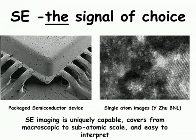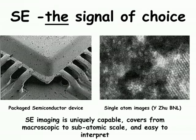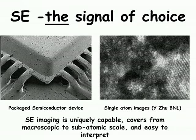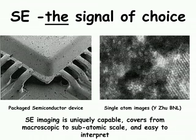What signal do we use? We use secondary electrons. As we now know from recent research, secondary electrons are uniquely capable. They cover everything from something macroscopic — on the left a package chip assembly at just a few tens of times magnification — to an image of single atoms on the right, again collected using secondary electrons. You can go seamlessly from that nanoscale to the macro scale and anywhere in between. The secondary electron signal generated with this machine is extremely capable and versatile.